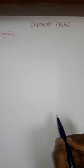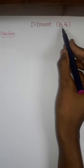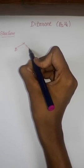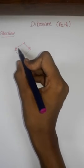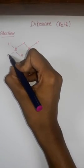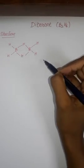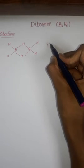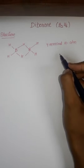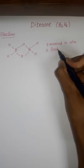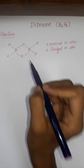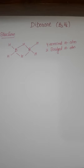Diborane structure. Diborane consists of 2 boron atoms and 6 hydrogen atoms. This is the structure of Diborane. There are 4 terminal hydrogen atoms present and 2 bridging hydrogen atoms present, and 2 boron atoms are also present. This is the structure of Diborane.